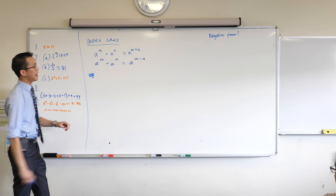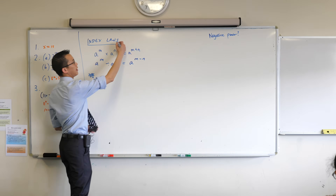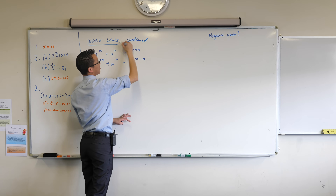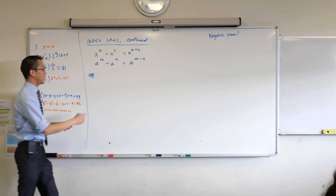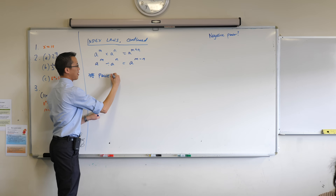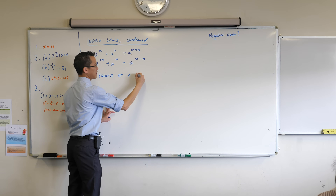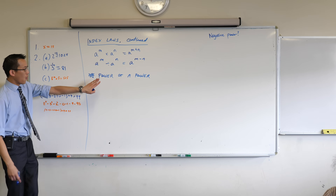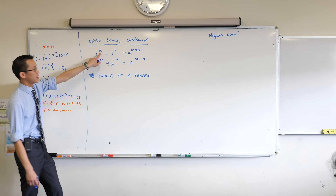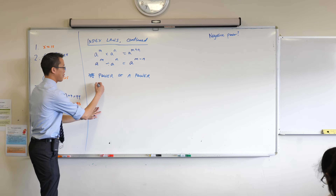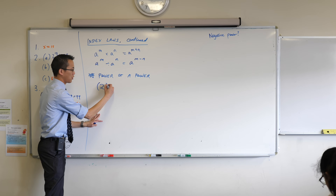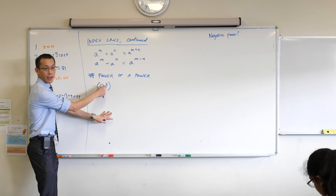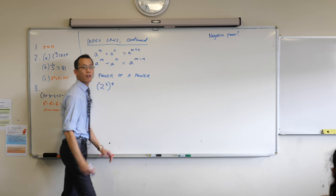The first little subheading that I'd love you to make under today's work, which you could call index laws continued, is what we're going to call power of a power. And if that doesn't mean anything to you just yet, don't worry — we're going to explain with what we write underneath. To understand what this means, we know what powers are. A power of a power looks something like this: if I had, say, two cubed, I could raise this to another power — there's already a power there — and take a power of a power, like to the power of five.